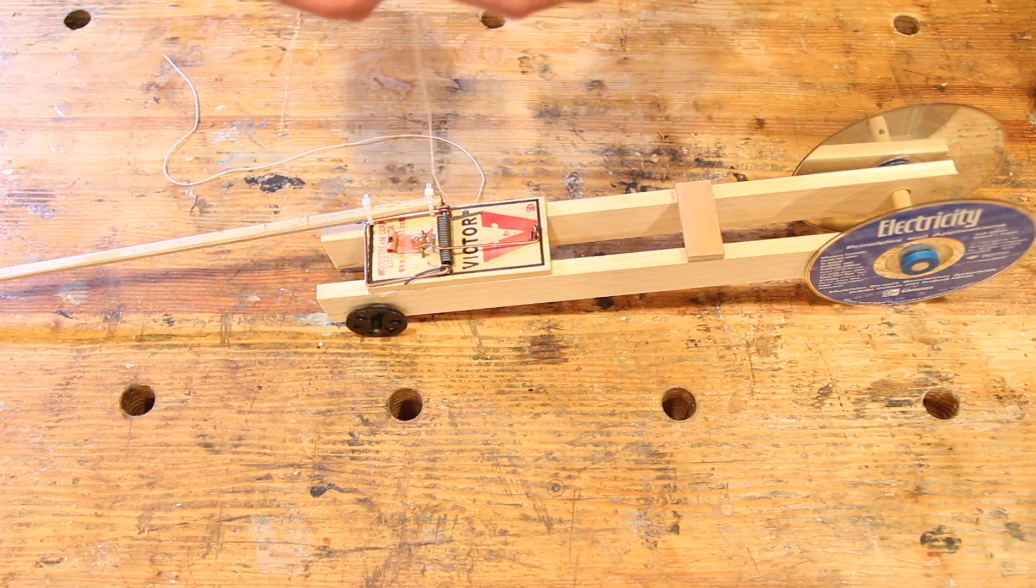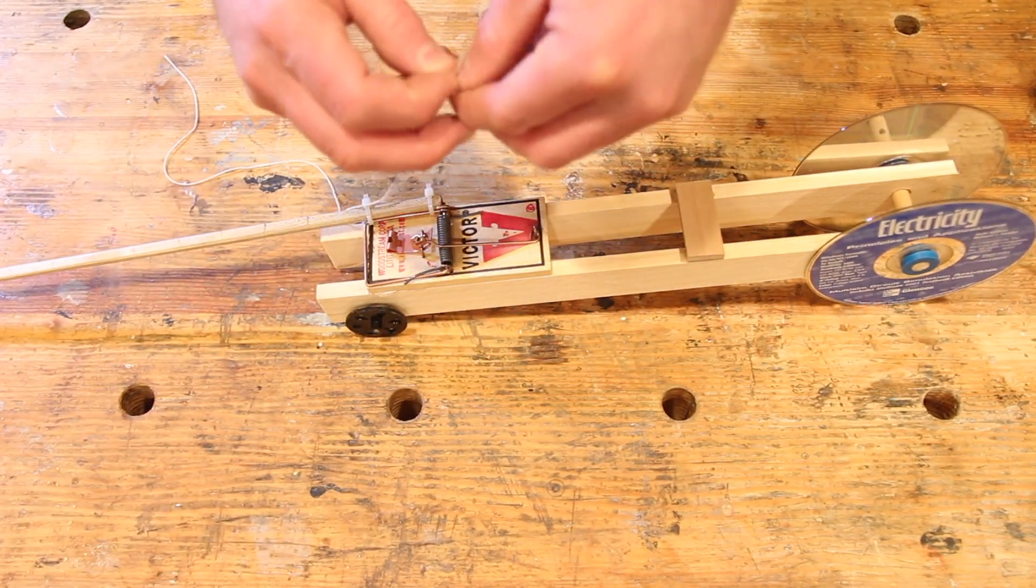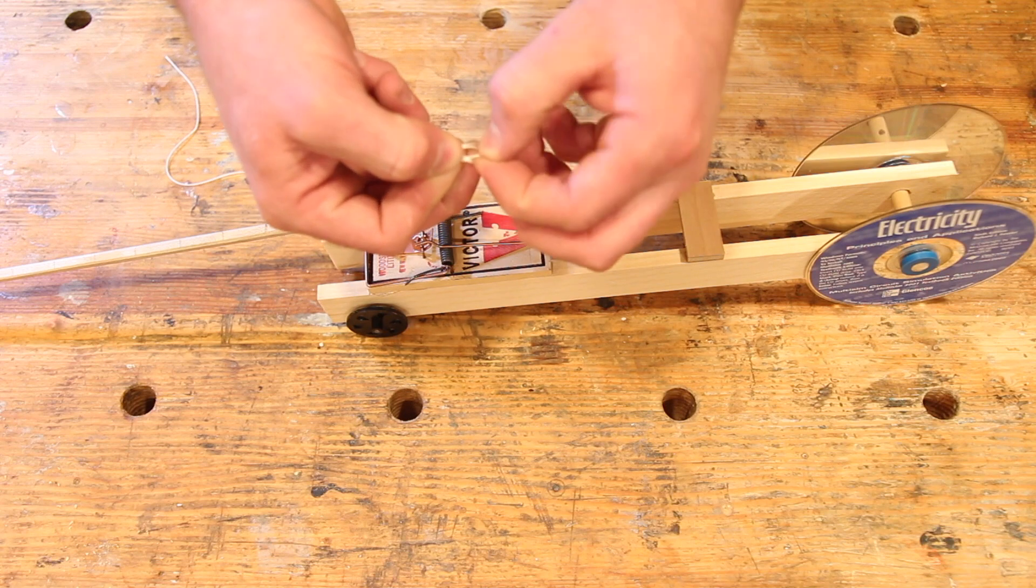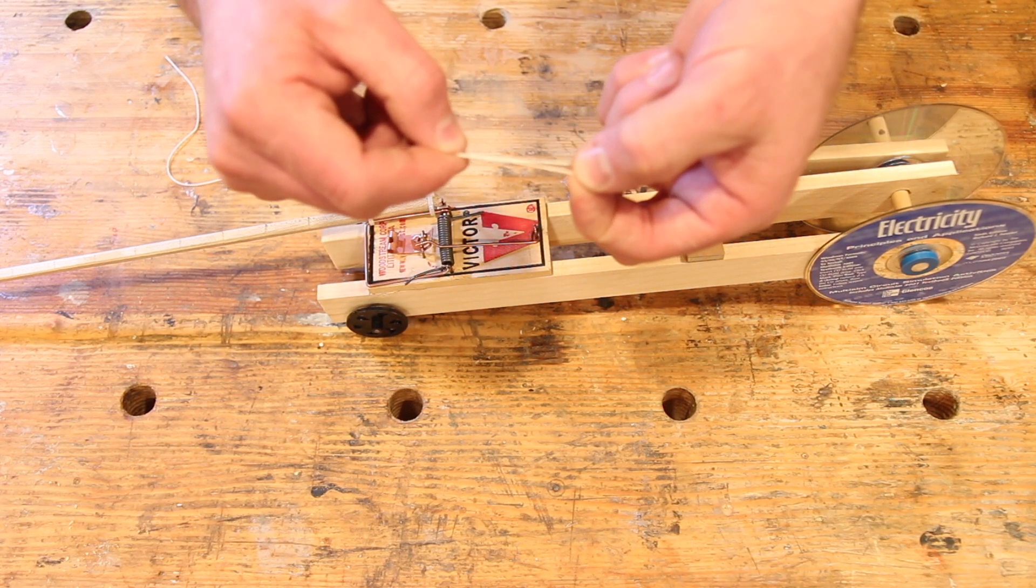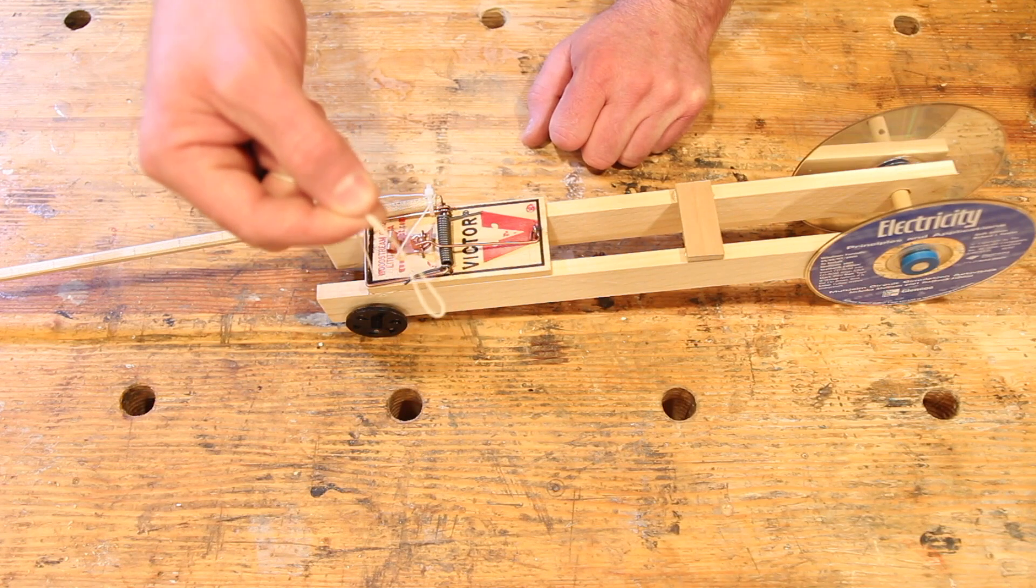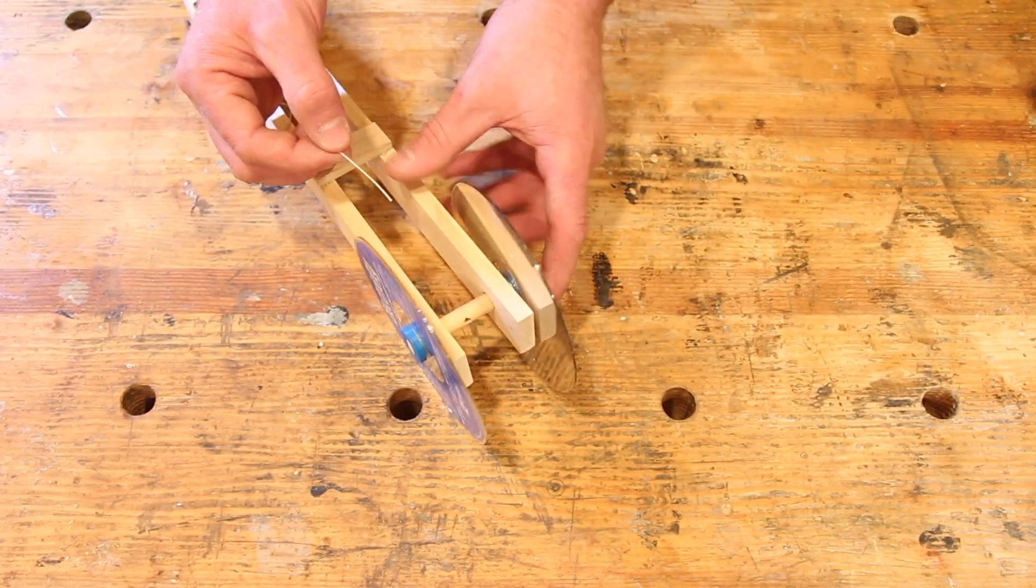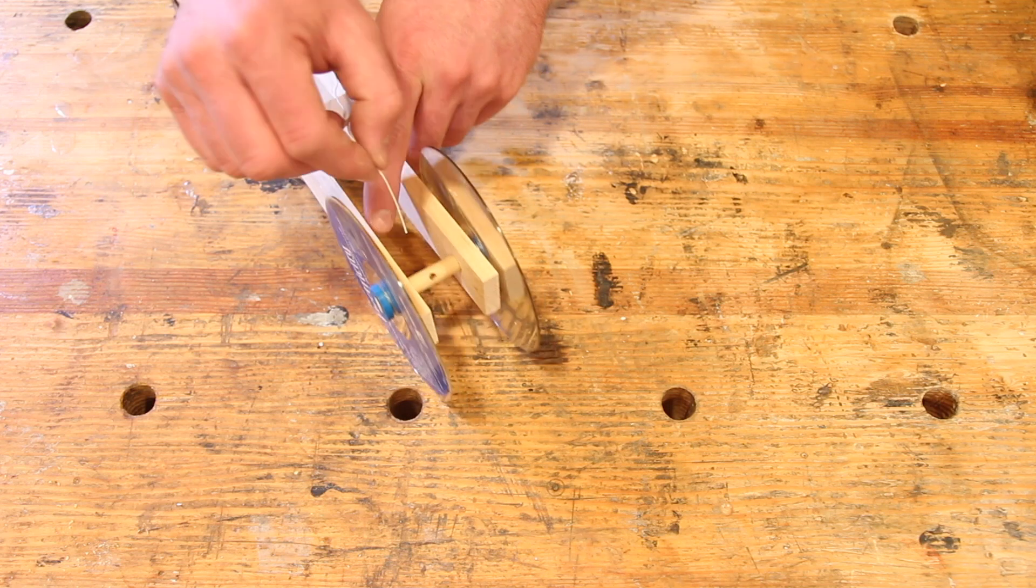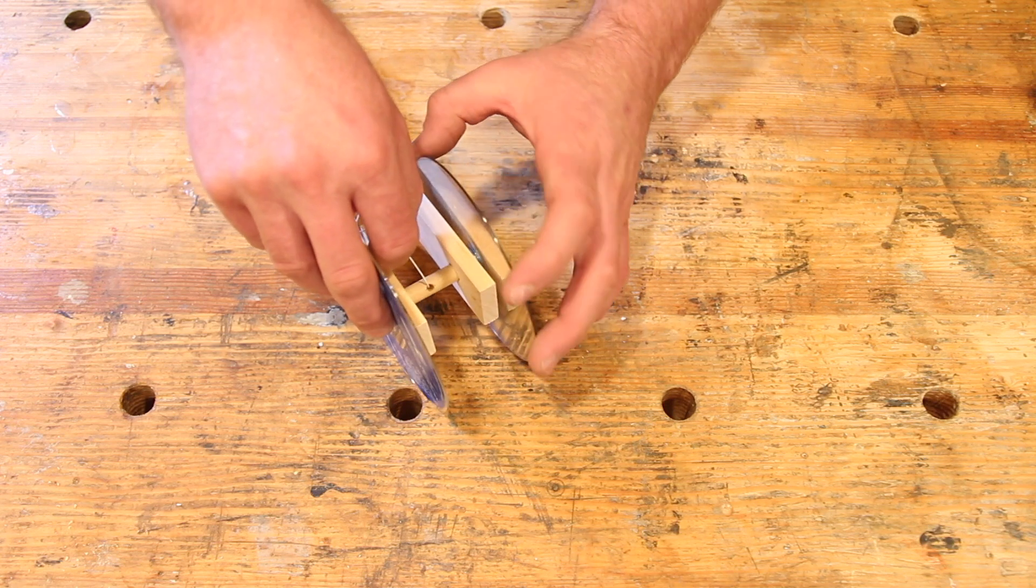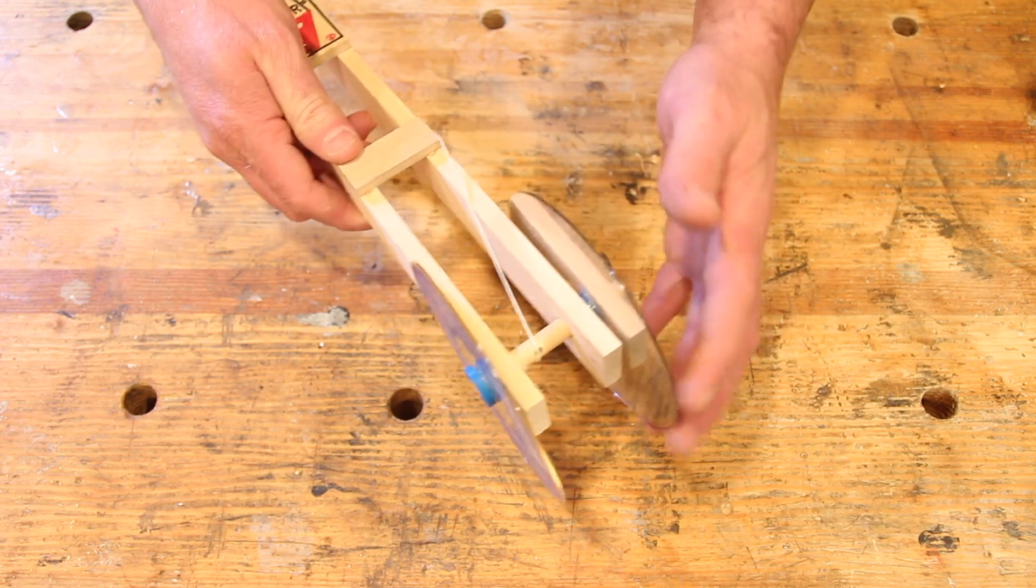Now we're going to make a loop in this string. Take it and tie it over itself and then pull it through. So it's just a loop that will go over the end of our arm over here. The other side of the string is going to get started by going inside of this little hole that we drilled on the center of the axle. You'll just get it started here. And then it should allow you to twist that string around. We're going to go backwards with our wheels and just start wrapping it up around that back axle.